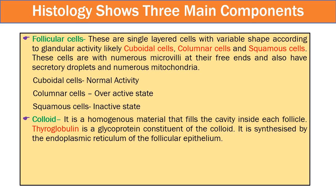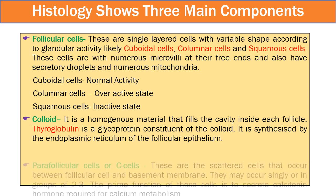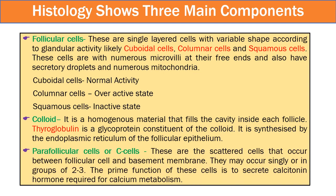The colloid, or the homogeneous material that fills the cavity inside the follicle, is thyroglobulin, which is a glycoprotein. Thyroglobulin is synthesized by the endoplasmic reticulum of the follicular epithelium. Parafollicular cells, or C-cells, are scattered between the follicular cells and the basement membrane. They secrete calcitonin hormone, which helps in calcium metabolism in the body. C-cells may occur singly or in a group of two to three.